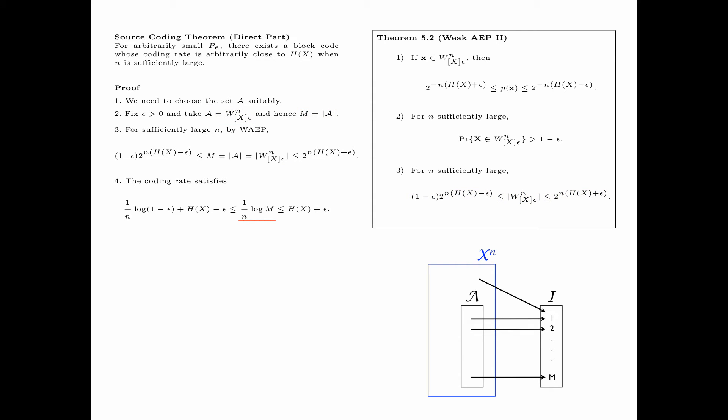Therefore, taking the logarithm and dividing by n, the coding rate (1/n) log m is lower bounded by (1/n) log(1 - epsilon) + H(x) - epsilon, and upper bounded by H(x) + epsilon. By the weak AEP, the probability of error — the probability that the x sequence is not in A, which equals the probability that the sequence x is not typical — is less than epsilon. Letting epsilon go to 0, all bounds go to 0, and we see that the coding rate (1/n) log m tends to H(x) while p_e tends to 0.